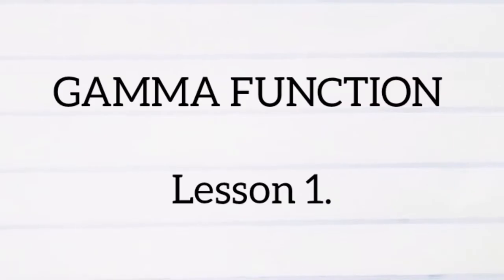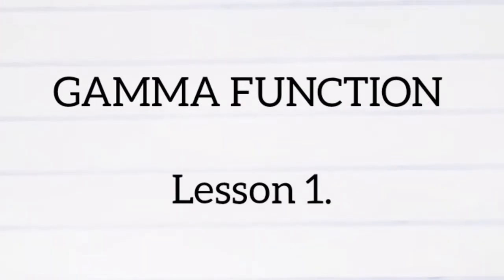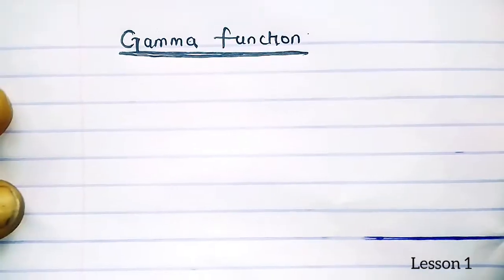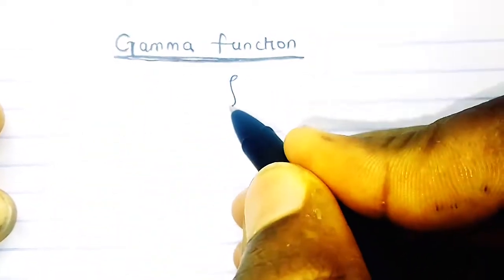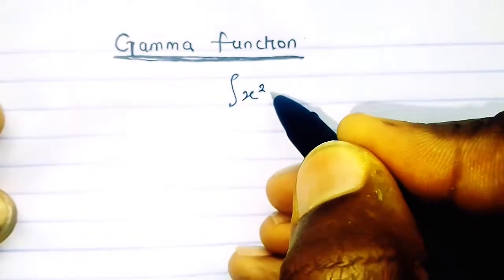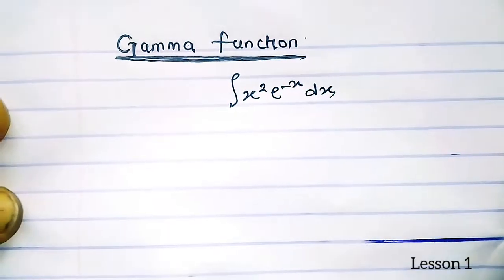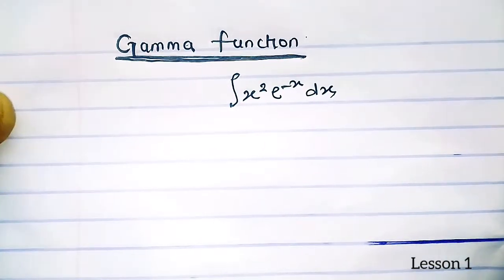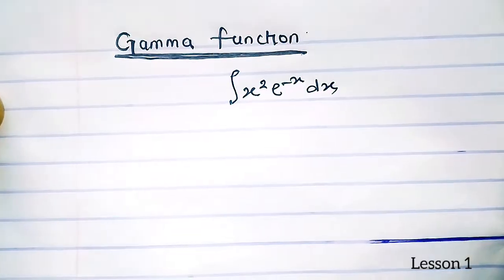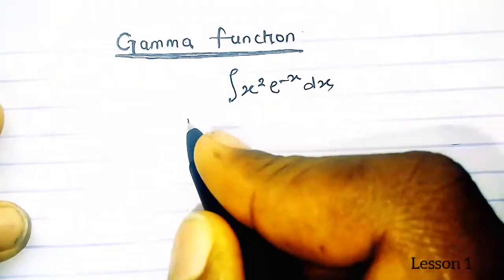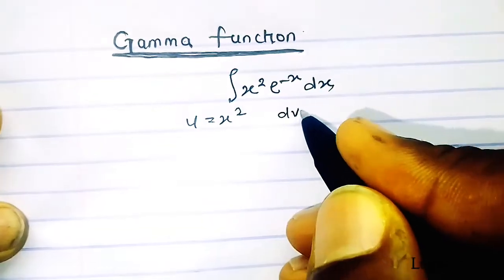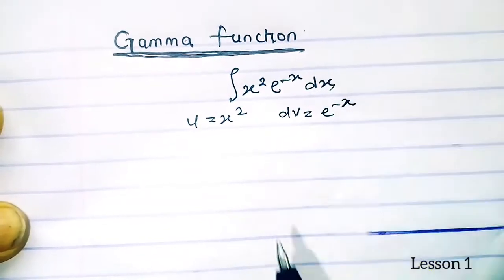The gamma function is essentially a shortcut for solving complex integration by parts questions. We employ it when given a very difficult integral — for example, integrating x raised to the power 2 times e to the minus x dx. This can be solved using integration by parts by letting u equal x squared and dv equal e to the minus x.